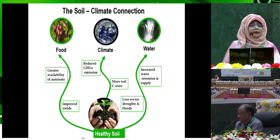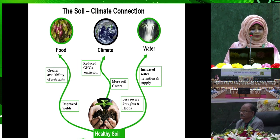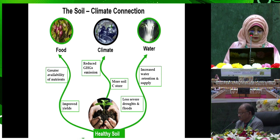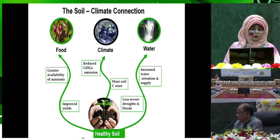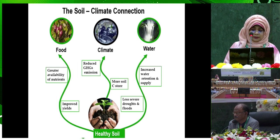We know soil and climate are very connected because healthy soil is directly connected with food through greater availability of nutrients and improved yields. With the climate, it sequesters more soil carbon and reduces greenhouse gas emission. And with water, it increases water retention and supply in the soil.